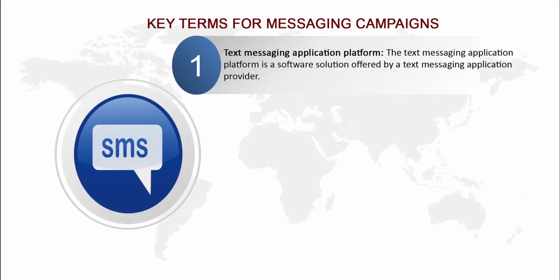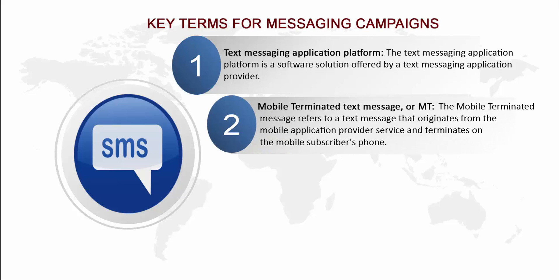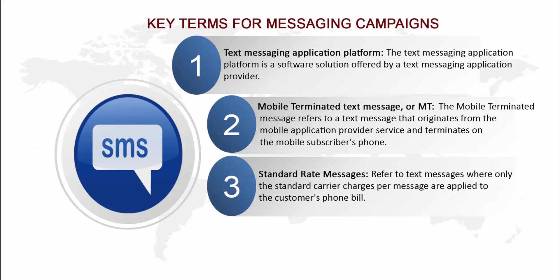This software is prepared using Java, HTML, CSS, and possibly XML code. The second feature is mobile terminated text message or MT — it refers to text messages that originate from a mobile application service provider and terminate on the mobile subscriber's phone. For example, to find your IMEI number, type star-hash-zero-six-hash on your mobile device and it will display the IMEI number provided by the manufacturer.